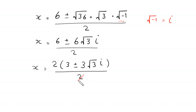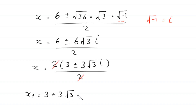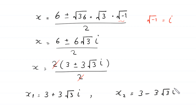The 2 cancels, and we get two values of x: x₁ equals 3 plus 3 root 3 i, and x₂ equals 3 minus 3 root 3 i.